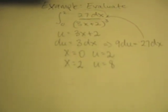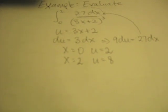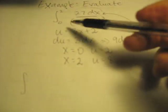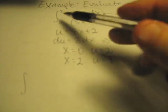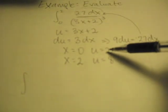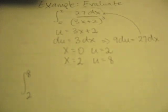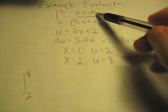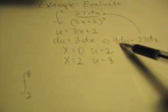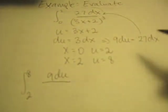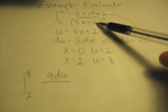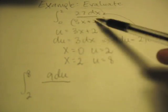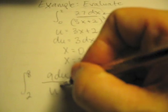And so consequently, my integral becomes the integral now, instead of from 0 to 2, it would become from 2 to 8. And I would have, instead of 27 dx, I would have 9 du. And this would now be divided by 3x plus 2 cubed, but 3x plus 2 is u, so I'd have u cubed.